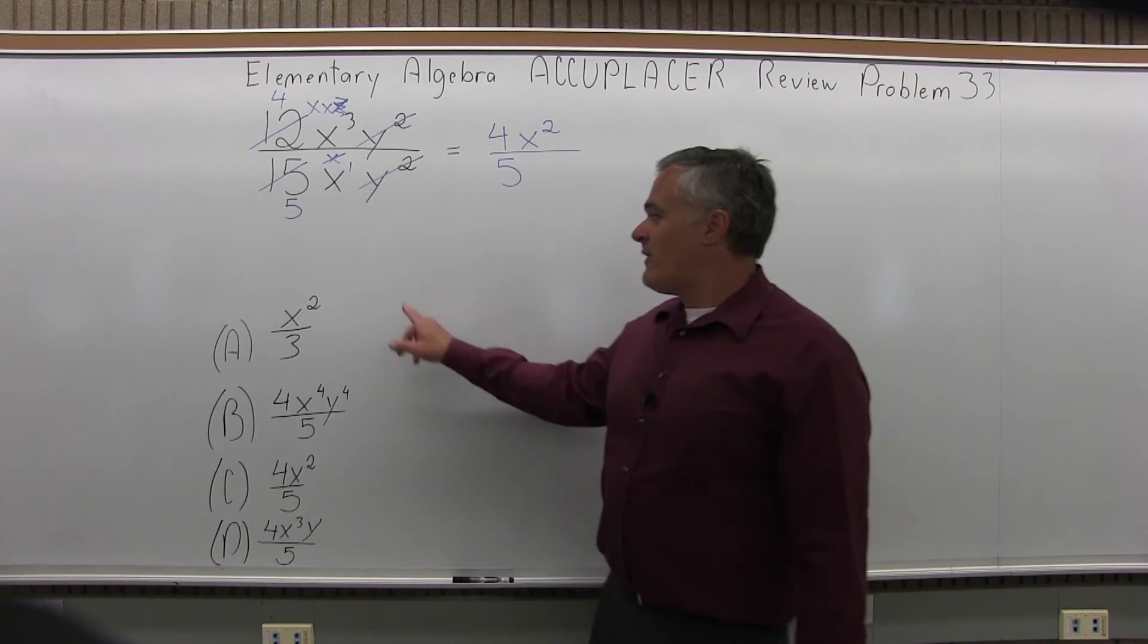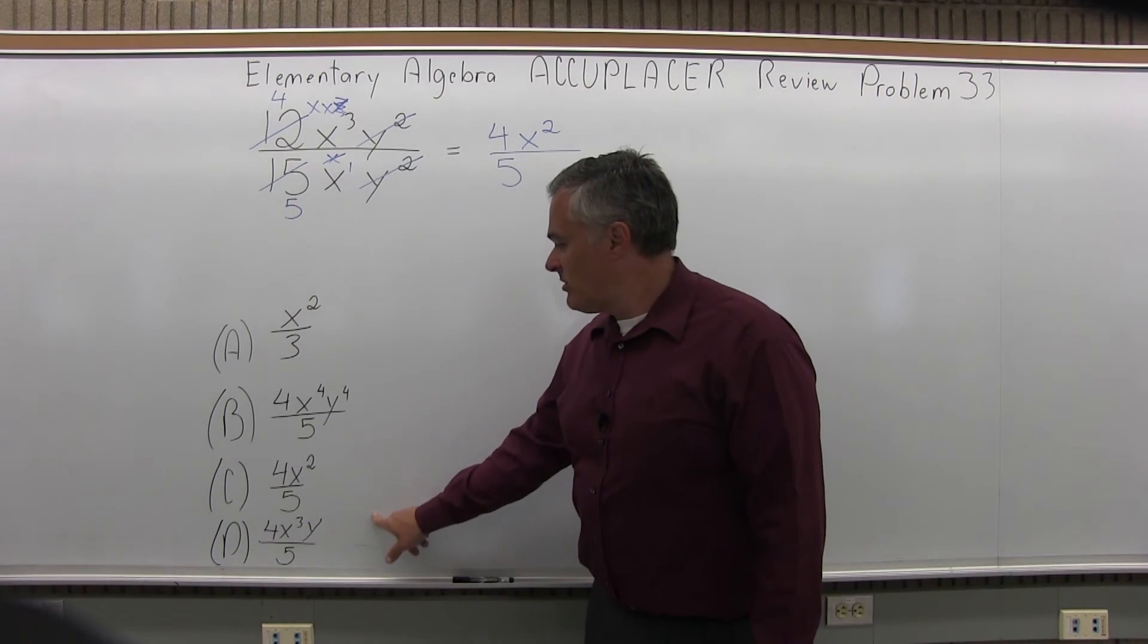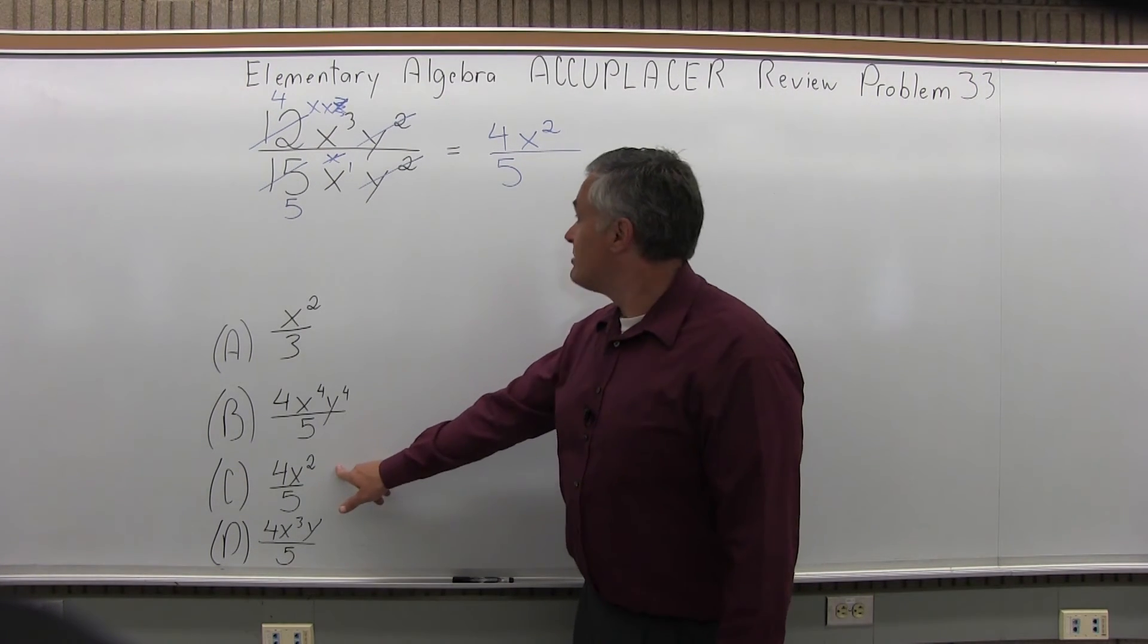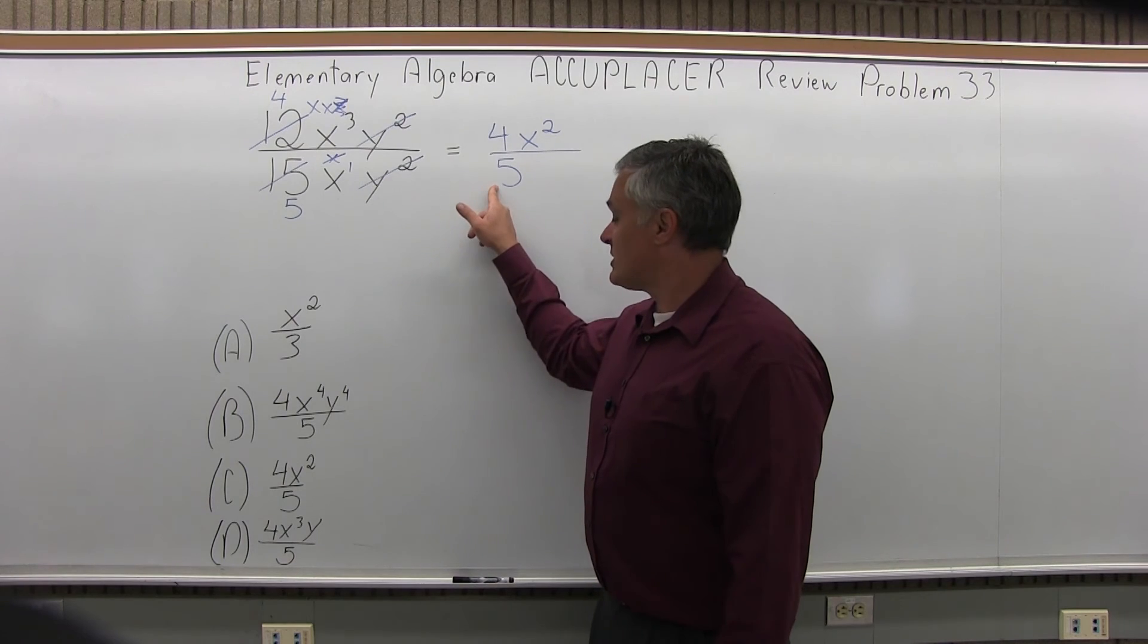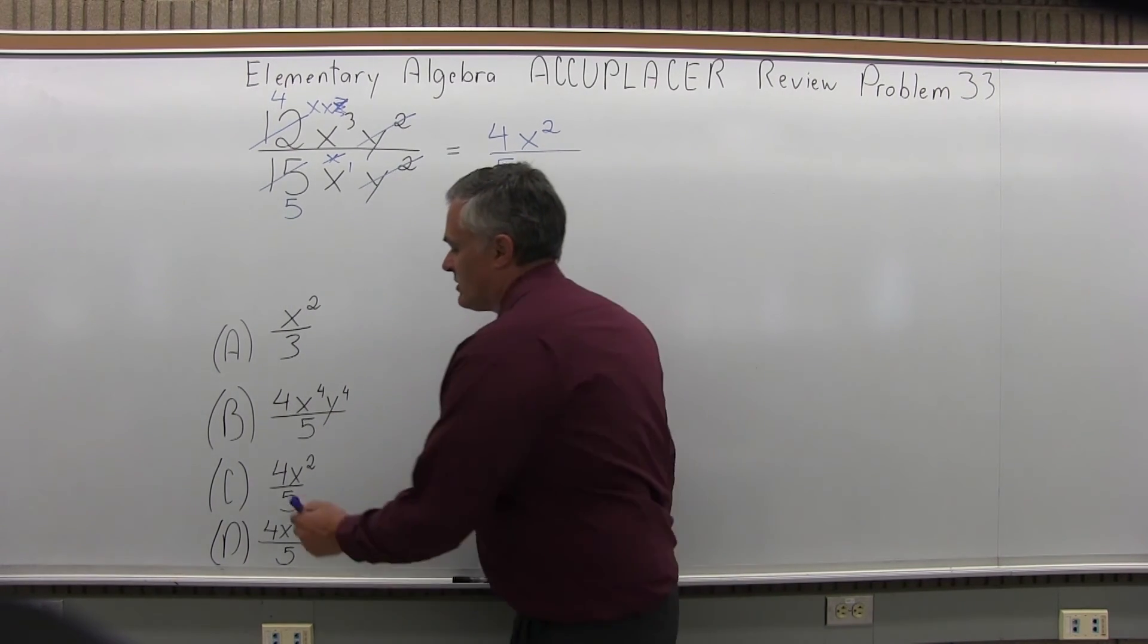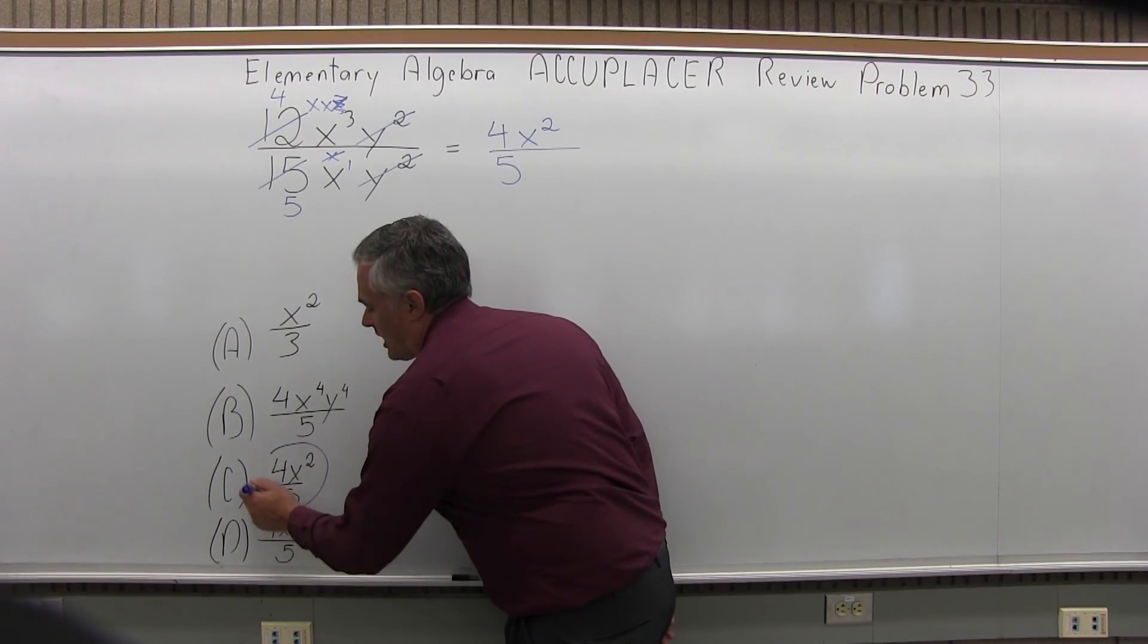Now, if I check my list of available options, option c is a perfect match, 4x squared over 5. So the answer to 33 is option c.